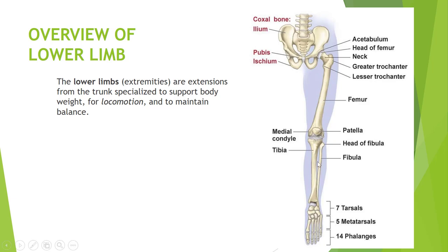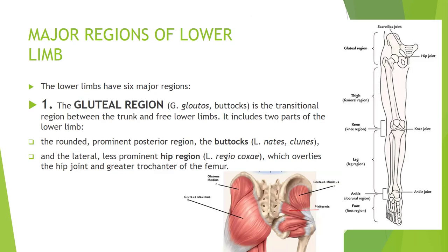These are the bones which form the lower limb. There are six major regions of the lower limb. The first region is called the gluteal region — the word gluteal means buttocks. It is the transitional region between the trunk and the free lower limb. As you can see in this diagram, the gluteal region lies between the upper body trunk and the free lower limb bones.